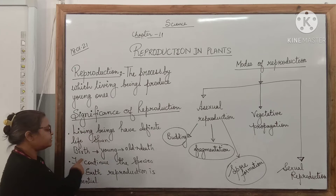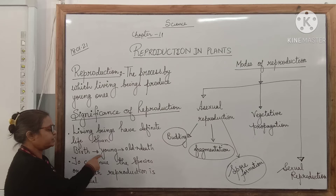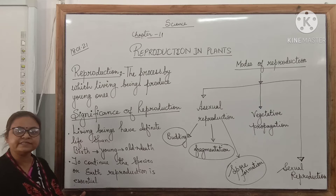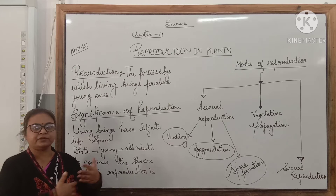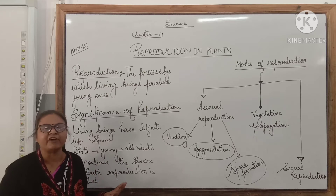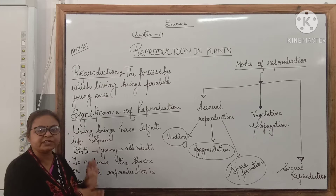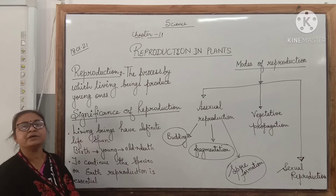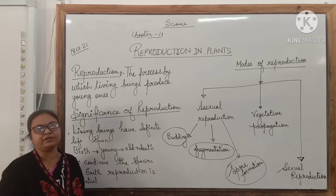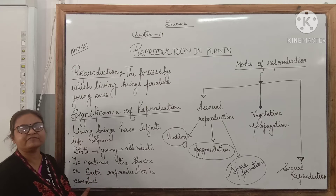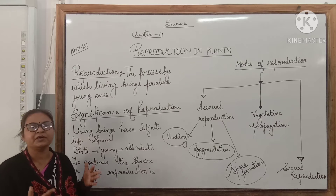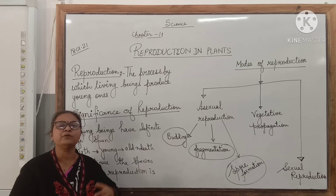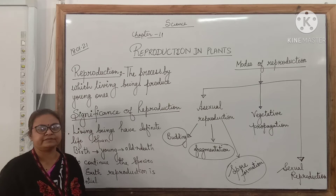Living organisms take birth, go through young age, become old, and die. It is necessary that the numbers are maintained; otherwise the whole species will be wiped out. So reproduction continues life on earth — it is very important. All living beings have this important characteristic of reproducing to produce young ones of their own kind, similar to themselves.